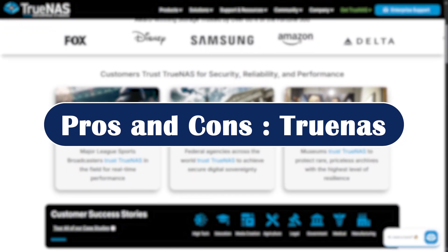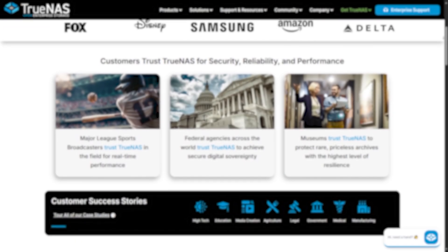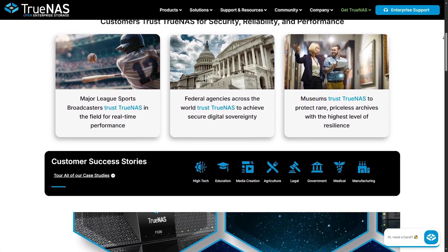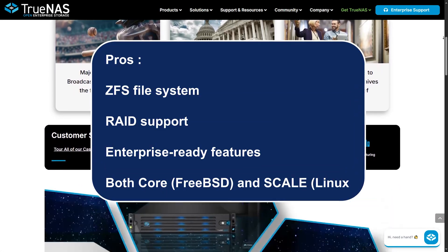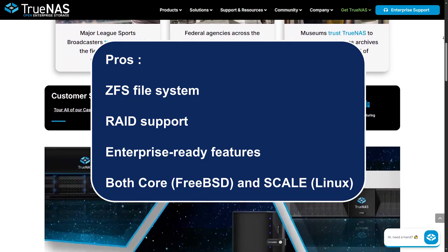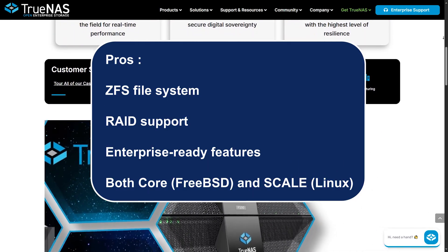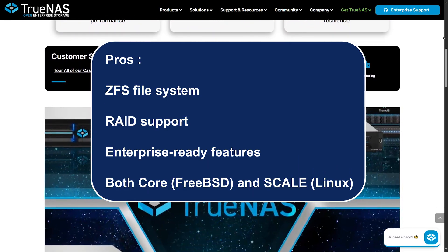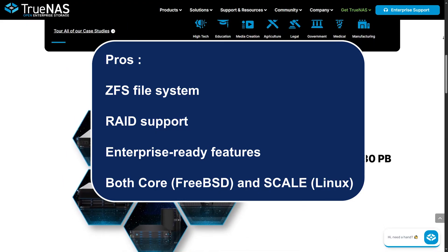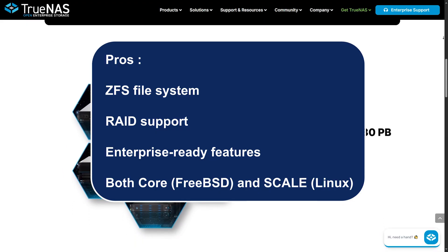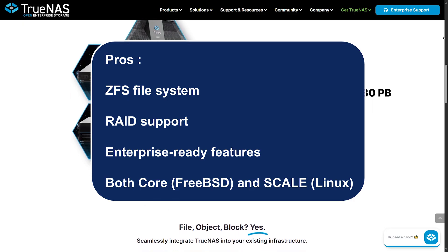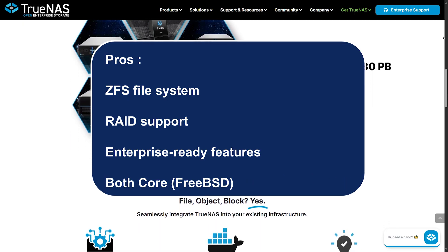Now for TrueNAS — and this is where power users should pay attention. The pros include the ZFS file system, which is unbeatable for data protection and snapshots, RAID support with powerful options for redundancy, and enterprise-ready features like replication, encryption, jails, and virtualization. Both Core (FreeBSD) and Scale (Linux) versions are available.